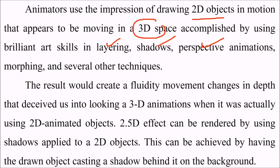The result creates a fluid movement with changes in depth that deceive us into perceiving 3D animation when it was actually using 2D animated objects. This 2.5D effect can be rendered by applying a shadow to a 2D object.